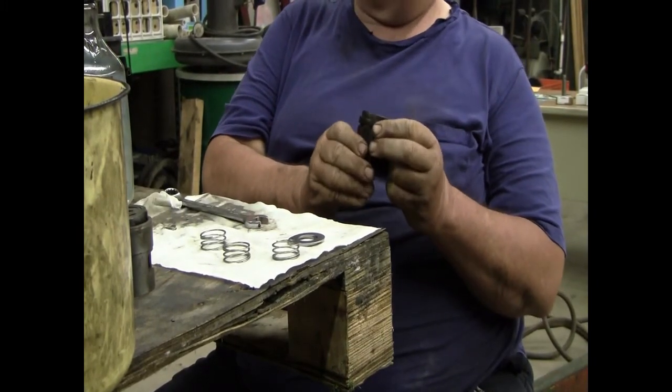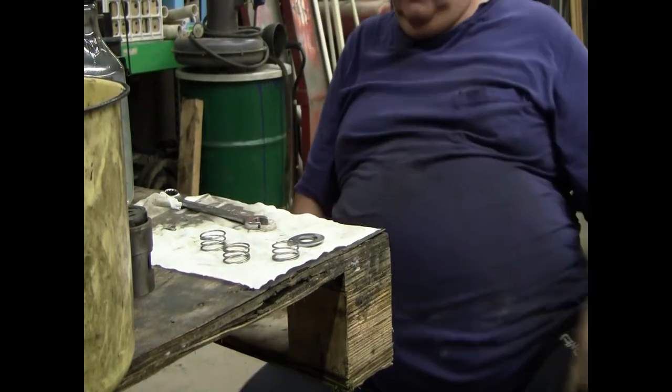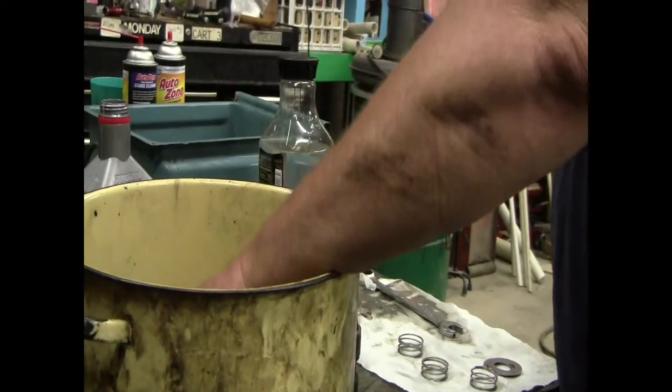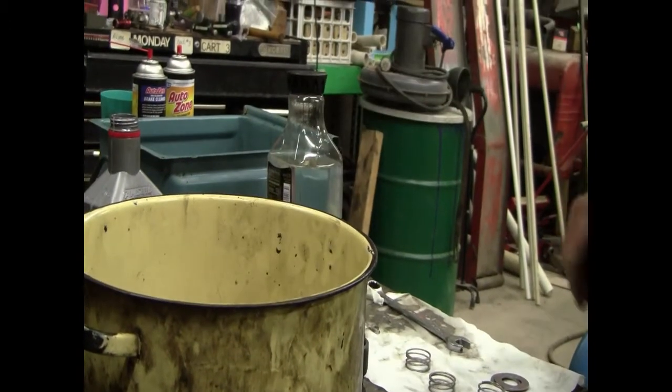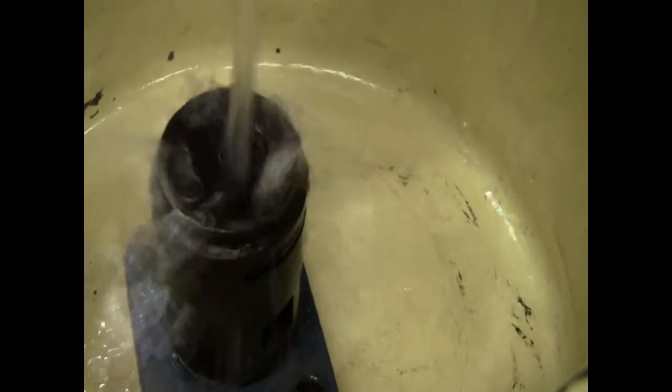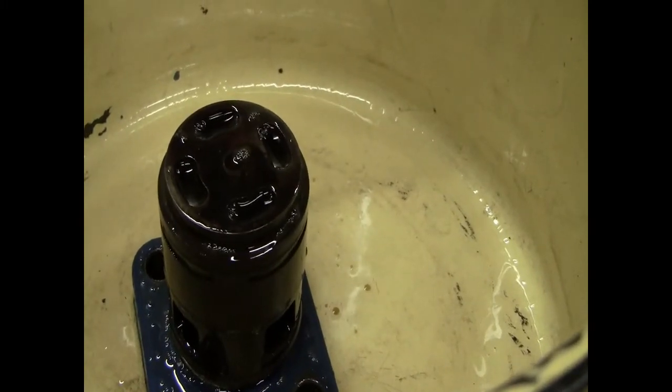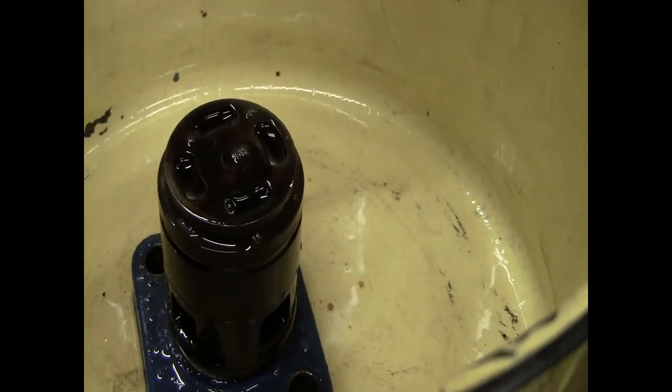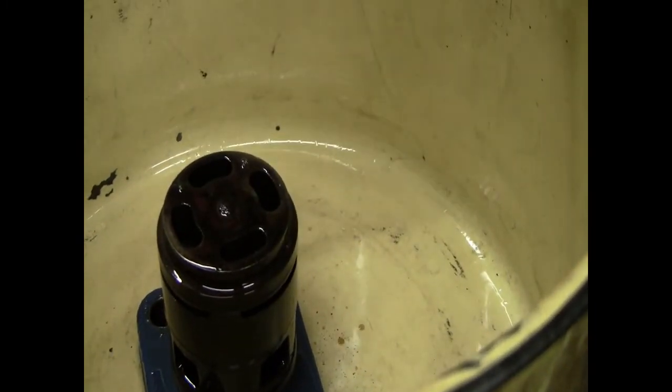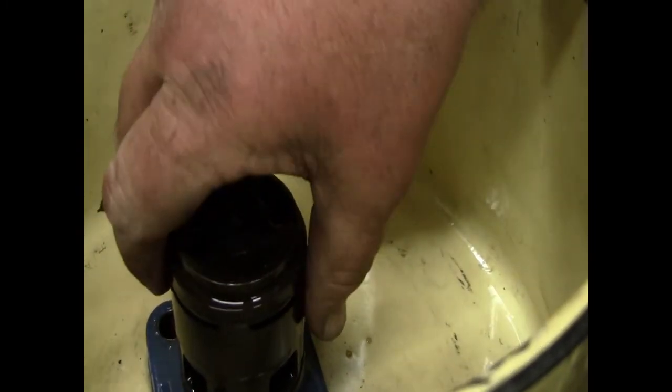Now, before we go back to the vise for our final tightening, we're going to set it in this bucket. This is gasoline. We're going to take, and if that stays in there for 10, 15 seconds, that's a good valve. If it wasn't a good valve, it would have run out just like that. That valve is ready to be tightened up.